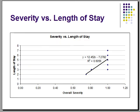Here, I plotted overall severity versus length of stay, data that can be found on the previous slide. As you can see, there is a positive relationship between the two variables. This indicates that there is an association or relationship between the overall severity of the patient's health and their length of stay. Thank you.